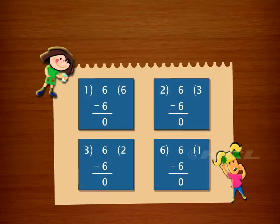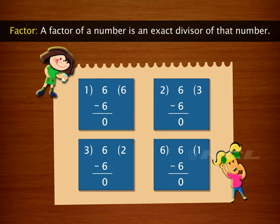Whereas when we divide six by one, two, three, or six, we get the remainder zero. So these numbers are exact divisors of six. Numbers that are exact divisors of a number are called its factors.